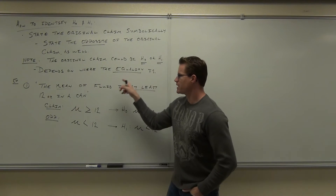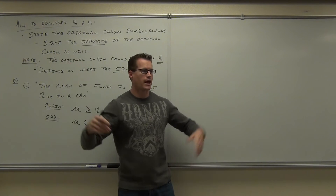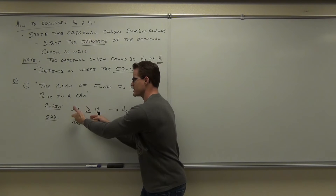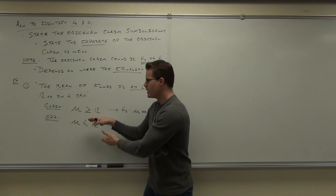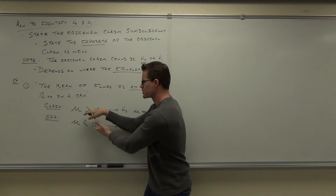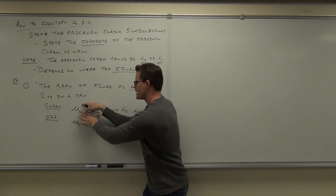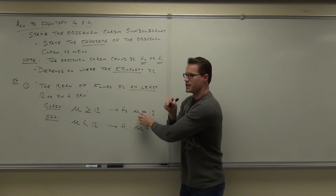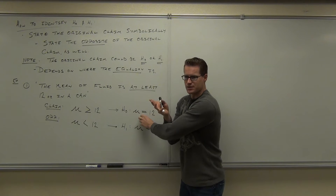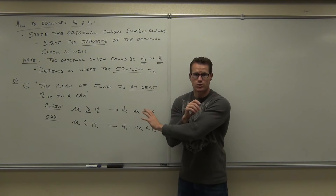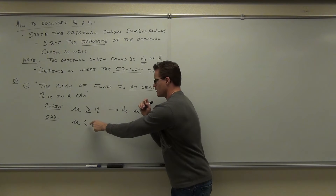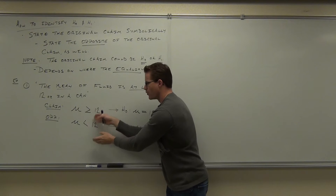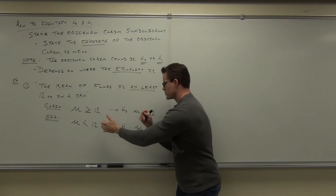Just a very small recap: you read a claim, you identify whether you're dealing with proportions or means — that's P or mu. Here we're dealing with a mu. You write the claim in symbolic notation, then you write the opposite of the claim. Then we translate this: which one is H sub zero, which one is H sub one? You look for the equals. This has the equals, which means my claim is H sub one. I just rewrite it without the greater than or equal to — just with the equal to. That's the formality of writing statistics in this age.